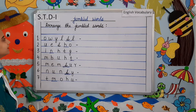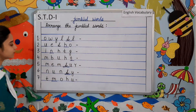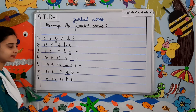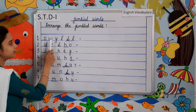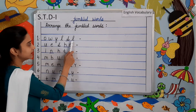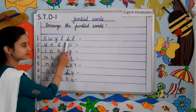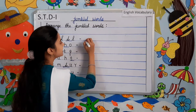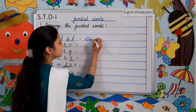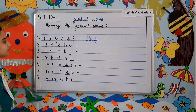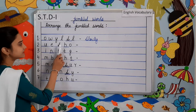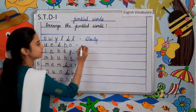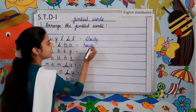Now students, look at the board. Arrange the jumbled words. Number one: O-W-Y-L-S-L. I have underlined the word S, so we have to start the word with the letter S. The correct word will be S-L-O-W-L-Y. Slowly. Number two: U-E-S-H-O. I have underlined the letter H, so the correct word will be H-O-U-S-E. House.